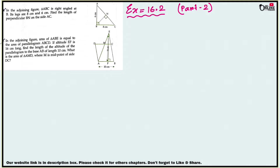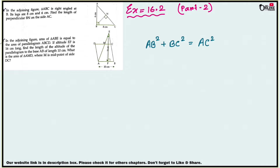According to the Pythagorean theorem: perpendicular squared plus base squared equals hypotenuse squared. In the given diagram, AB is the perpendicular, BC is the base, and AC is the hypotenuse. So AB squared plus BC squared equals AC squared — that is the Pythagorean theorem. Here AB is 6 and BC is 8.